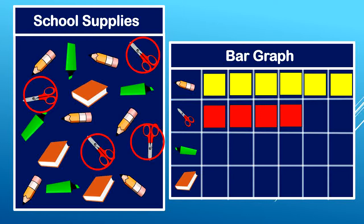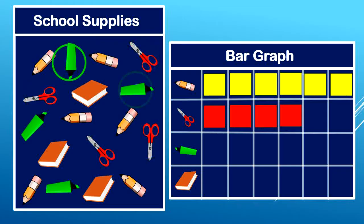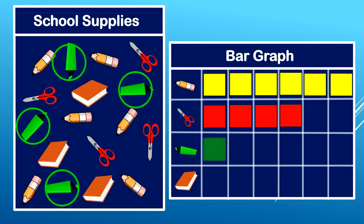Now we can move down and count our markers. One, two, three, four again. Those are going to go — you guessed it — in the marker row: one, two, three, four.